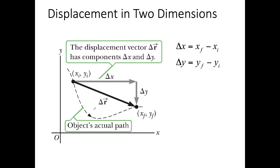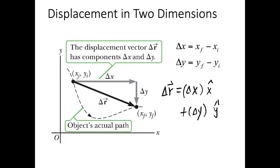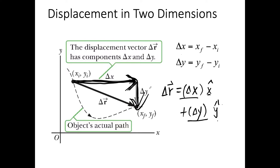The only difference from two dimensions to one dimension is that you not only have displacement in the x direction, you might also have displacement in the y direction. Your delta r is a vector sum: delta x in the x direction plus delta y in the y direction. Delta x and delta y give us the magnitudes, and the direction is either positive or negative x or y. Adding these two vectors gives you the total displacement in two dimensions.